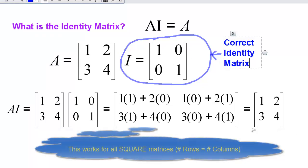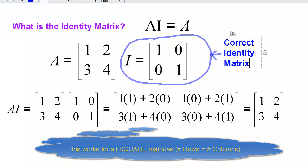By the way, this works with any square matrix where the number of rows and columns is equal. If it's a 50-by-50 matrix, it has 50 ones all along the main diagonal and zeros everywhere else. The identity matrix always has ones in the main diagonal and zeros everywhere else.